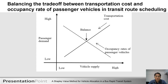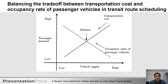However, there is a trade-off between vehicle transportation costs — which include fuel consumption, maintenance and repairs, driver salary, etc. — and the occupancy rate of passenger vehicles in the public transportation system. Take a look at this graph. The upward line represents the transportation costs: the greater the passenger demand and the higher the number of vehicles dispatched, the greater the cost incurred.